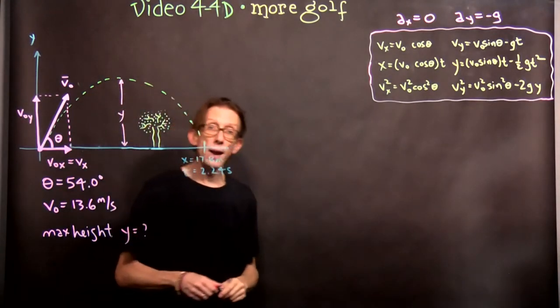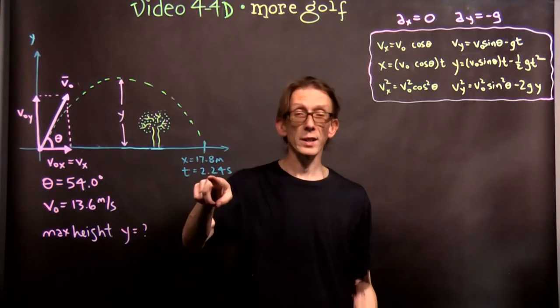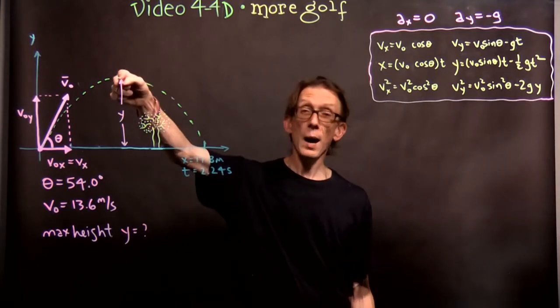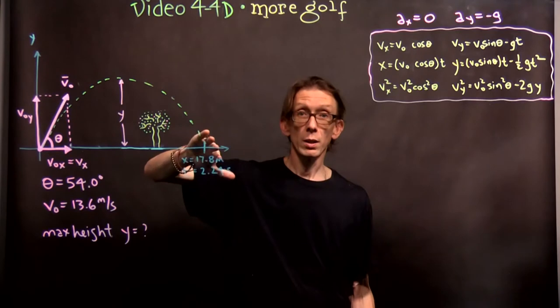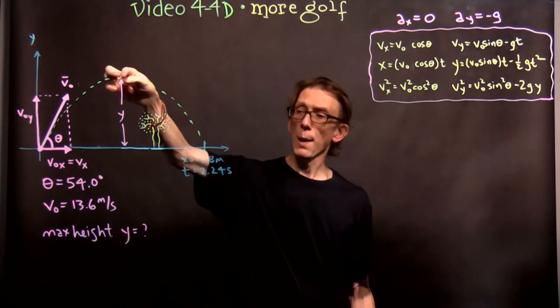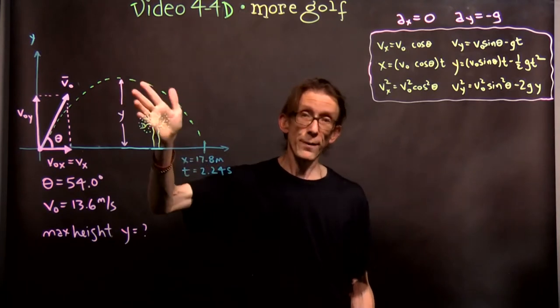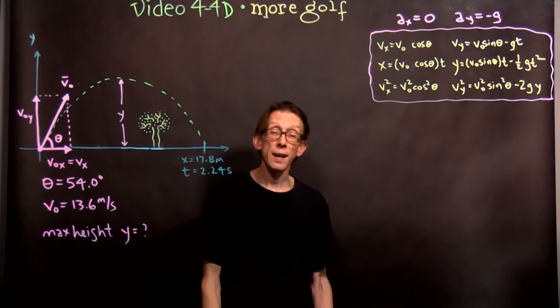We can solve this in a number of ways. One way that you might think about doing it is, well, if the ball hits the ground at 2.24 seconds, then the time at the top is actually exactly one half of that, because this is a symmetric motion. So, the time at the top is really 1.12 seconds. And you could use that information to determine what the max height is.